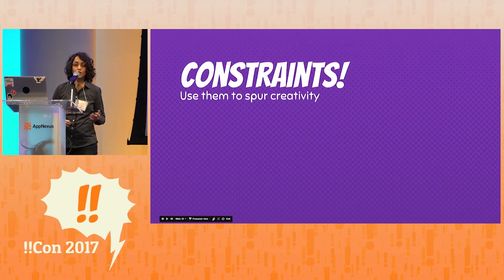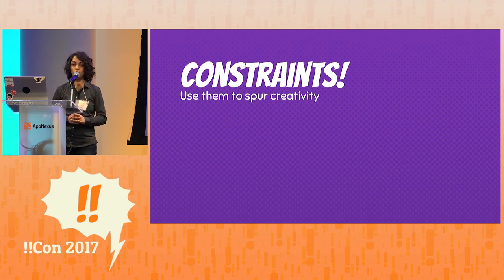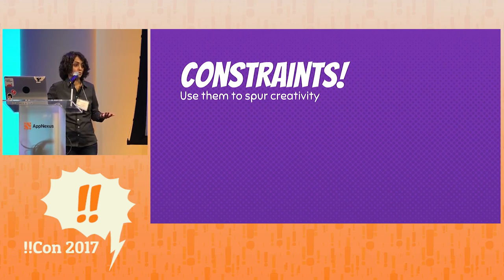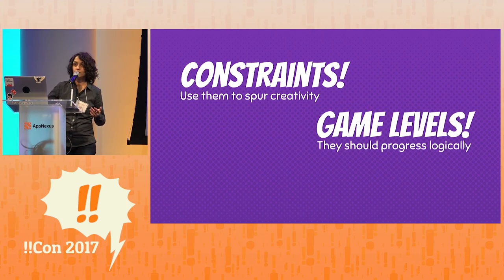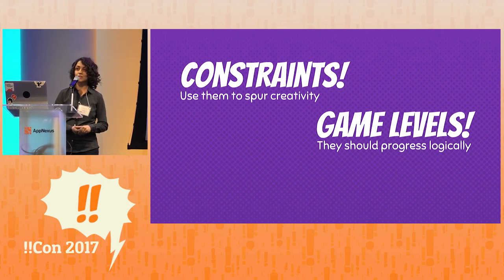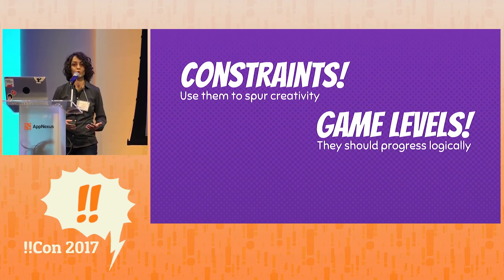So to sum up: constraints. Use them to spur creativity — you can come up with great ideas even when you have constraints. Use a design sprint or brainstorming session to think through creative ways to use constraints and force your focus. It can feel overwhelming to have too much choice — if you were just told to build a game with no direction, it would be overwhelming. Game levels should progress logically: start easy, get harder, and the harder levels should build on what you learned in the easier levels. And before you even start implementing, think of the different kinds of game mechanics you want to introduce, and then think about what order to introduce them in.